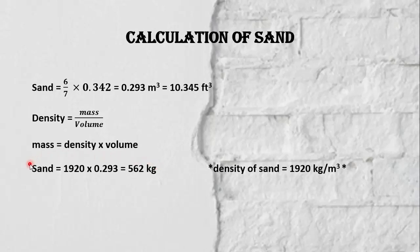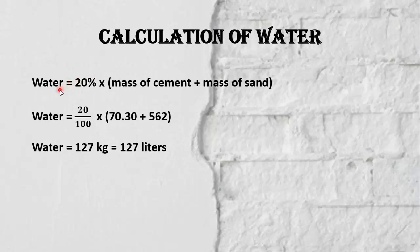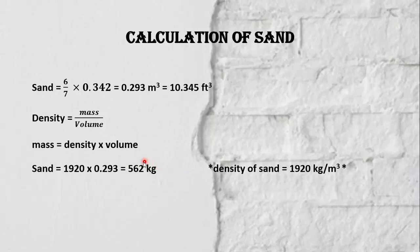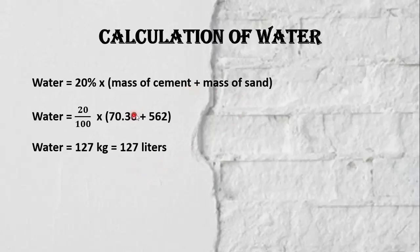In practice, sand is not measured in mass form — we calculated it in order to find the amount of water. To calculate water, first sum the total mass of cement and sand: cement is 70.3 kilograms and sand is 562 kilograms. Consider 20 percent of this total mass to get the water required.